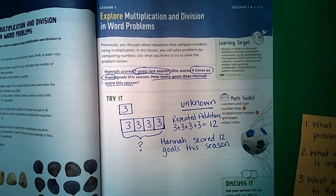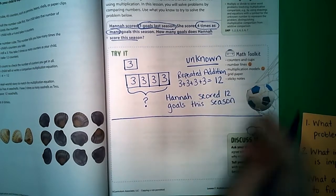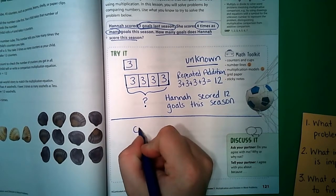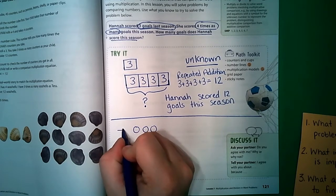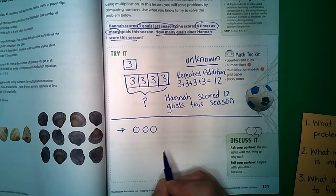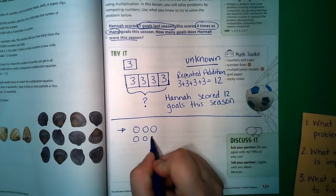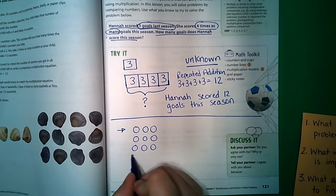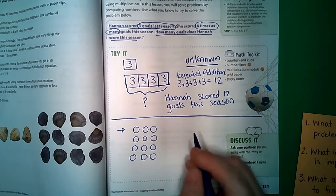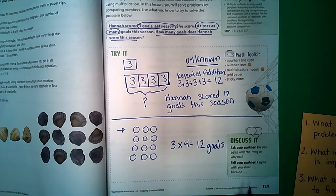Another way that we could solve this problem is by making an array. We know that Hannah scored three last season but four times as many this season — so one, two, three, four times as many. You can count those or write a multiplication problem, and either way you still get to the answer of 12 goals.